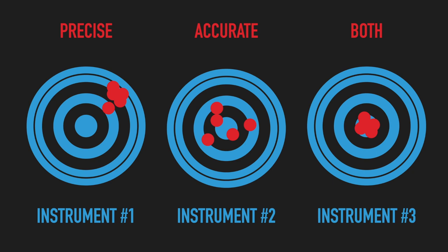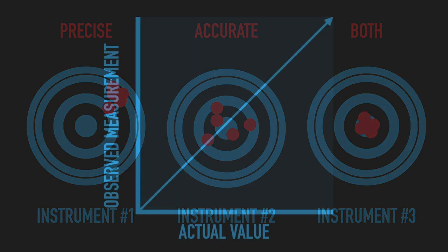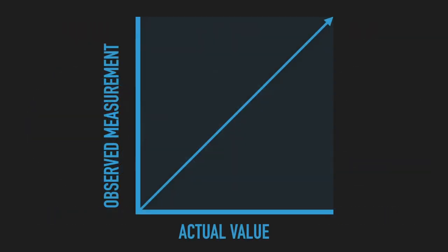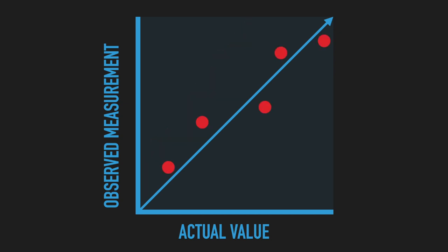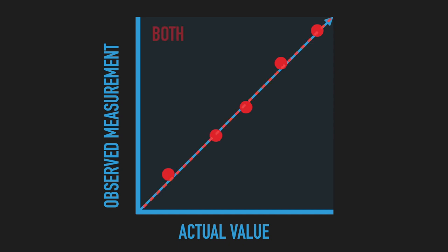Another way to think about these concepts is with a scatter plot comparing the actual values of a parameter and the corresponding observed measurements. Here we have measurements that are highly reproducible, since they strongly depend on the condition, so these are precise measurements. On the other hand, we have values that actually resemble the real value of the parameter, so these are accurate measurements. Finally, here we have values that resemble the actual values but also have a very small spread, so they are both precise and accurate measurements.